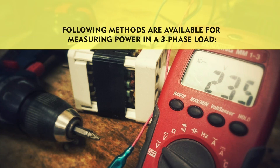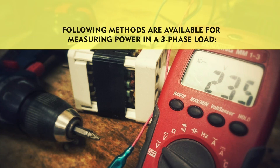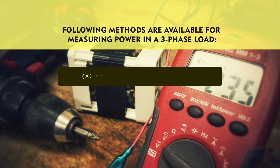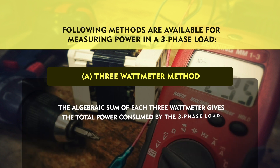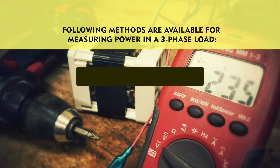The following methods are useful for measuring power in three-phase load. The first method is the 3-wattmeter method. In this method, 3 wattmeters are inserted one in each phase, and the algebraic sum of their readings gives the total power consumed by the three-phase load.